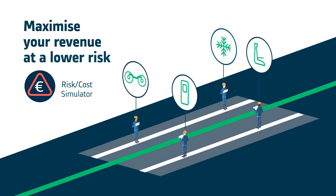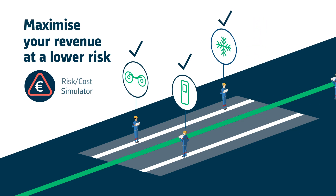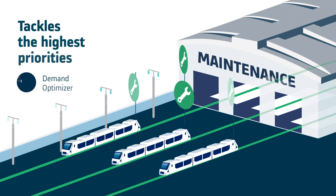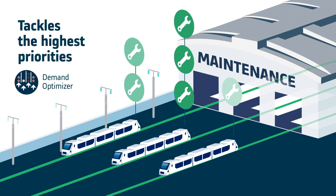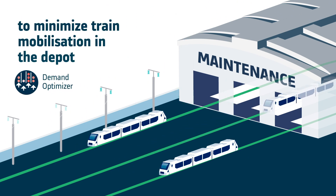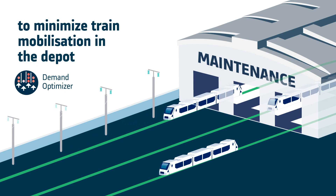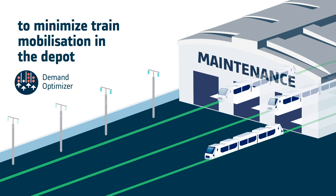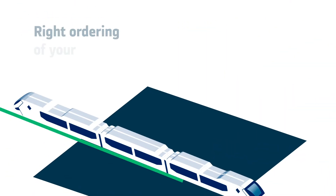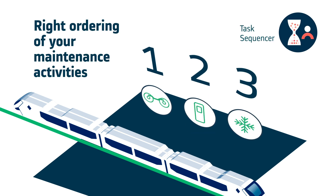The risk and cost simulation application helps you make the proper decision to postpone some maintenance tasks. With the Demand Optimiser, prioritise your work whilst considering depot capacity and determining the train's workload, maximised through automatic task sequencing.